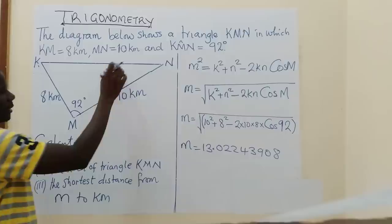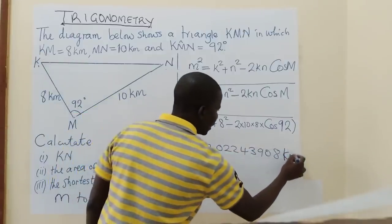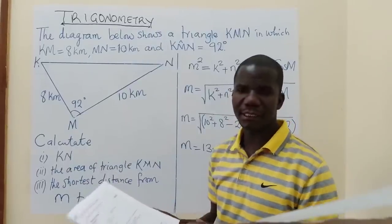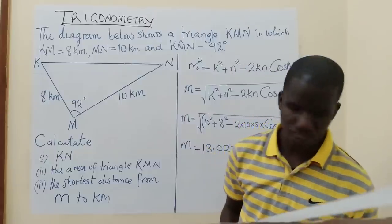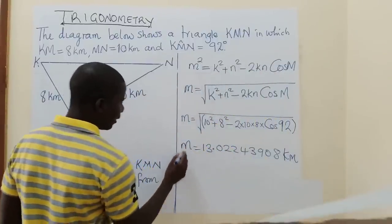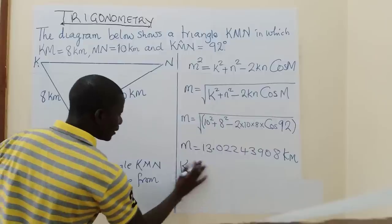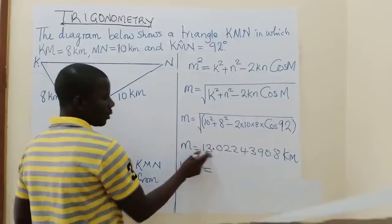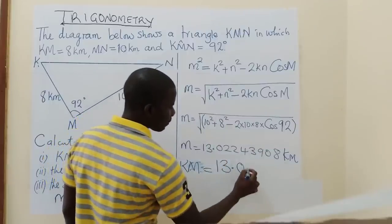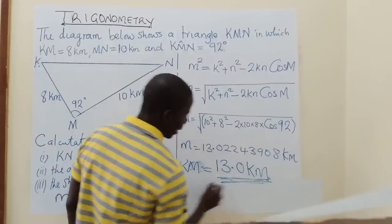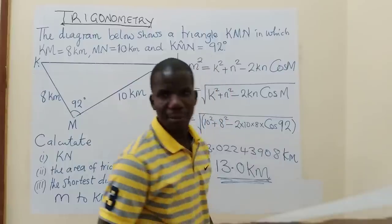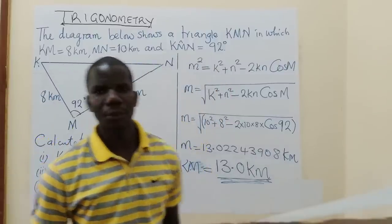The units we are dealing with are kilometers. Usually in an exam, the instruction says that if the degree of accuracy is not specified, you write all your answers correct to three significant figures. So KM = 13.0 kilometers. This is our answer for the first question, and you get five marks in the exam for doing this work.